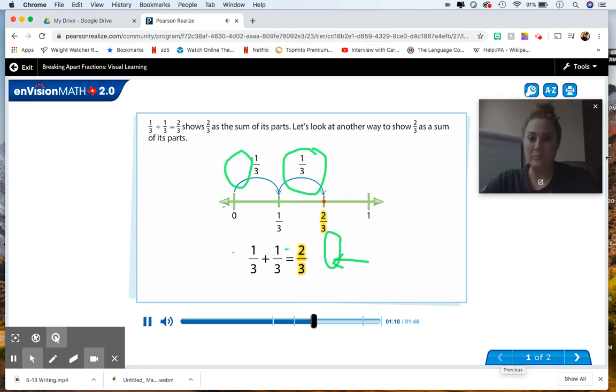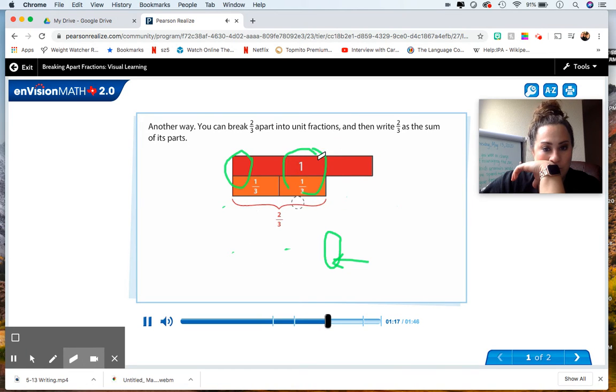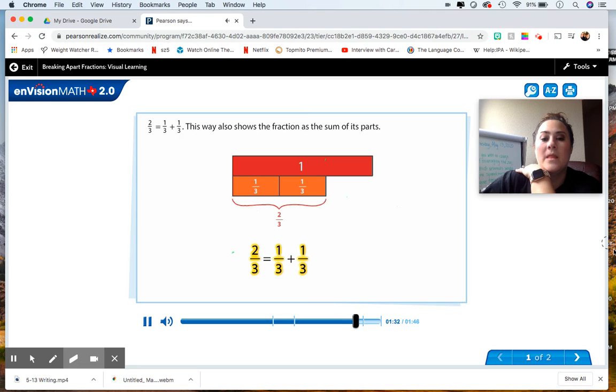One-third plus one-third equals two-thirds shows two-thirds as the sum of its parts. Let's look at another way to show two-thirds as a sum of its parts. Another way. You can break two-thirds apart into unit fractions, and then write two-thirds as the sum of its parts. Two-thirds equals one-third plus one-third. This way also shows the fraction as the sum of its parts.